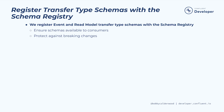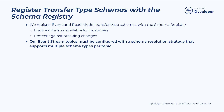Registering our event and read model transfer type schemas will ensure that valid schemas are available to downstream consumers, and that we'll be alerted to breaking schema changes if we evolve our schemas improperly. In order to support the various events that comprise our streams, we'll need to configure the registry with a schema resolution strategy that supports multiple schema types per topic. We represent our streams using a single Kafka topic with multiple schema types, rather than multiple topics with a single type, so that we can preserve the order on our event log.